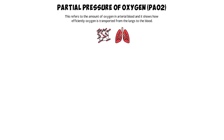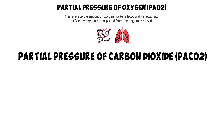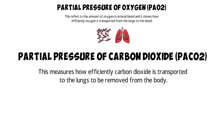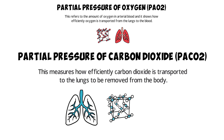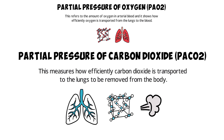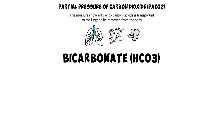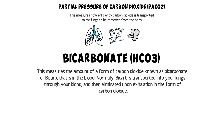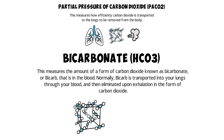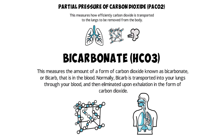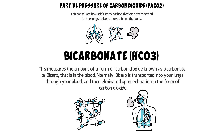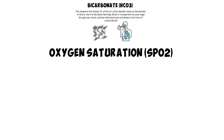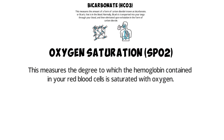Then there is the partial pressure of carbon dioxide, or PaCO2, which measures how efficiently carbon dioxide is transported to the lungs to be removed from the body. Next is bicarbonate, or HCO3, which measures the amount of bicarbonate in the blood. Normally bicarb is transported into your lungs through your blood and then eliminated upon exhalation in the form of carbon dioxide. And finally, there is oxygen saturation, or SpO2, which measures the degree to which the hemoglobin in your red blood cells is saturated with oxygen.